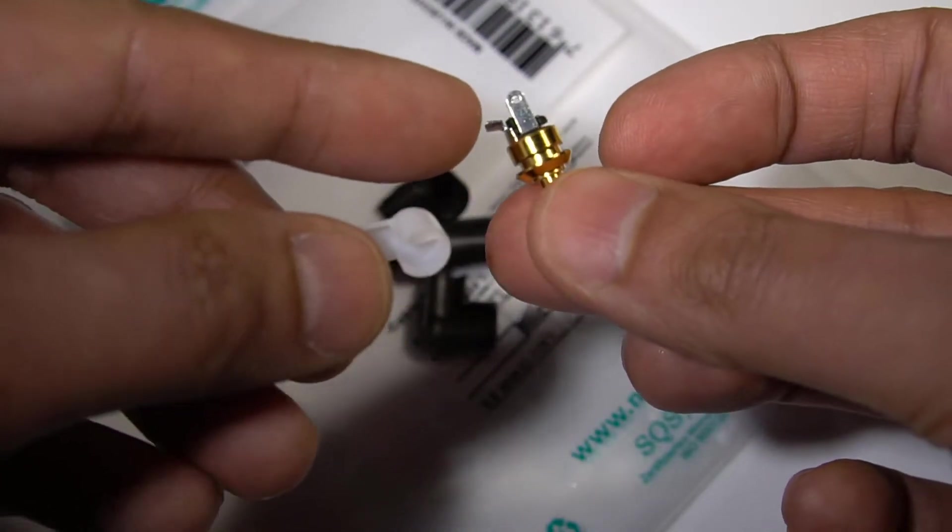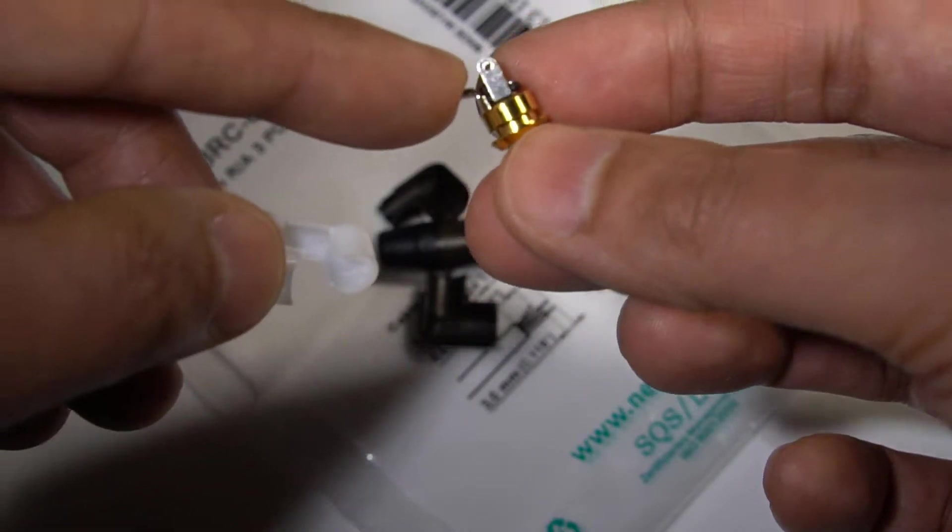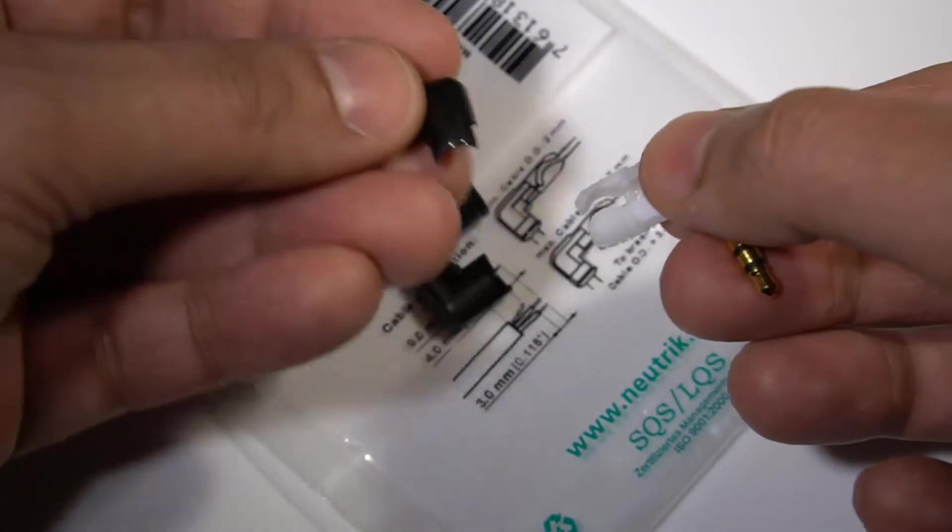So this is really easy to solder as well, because everything is exposed out in the open air. And then once you've soldered it, then you can apply this and then fit the shell on.